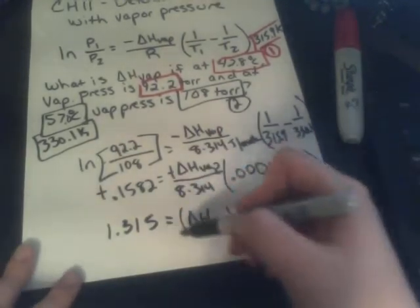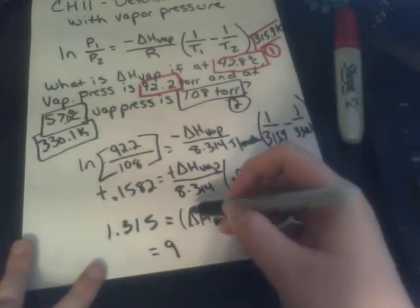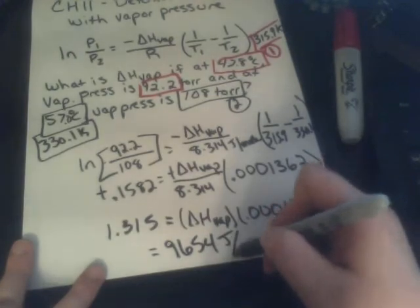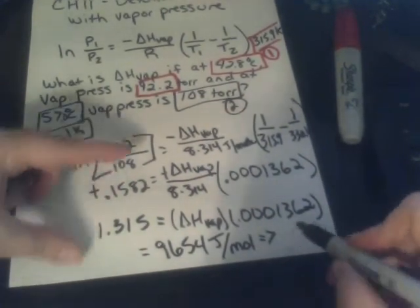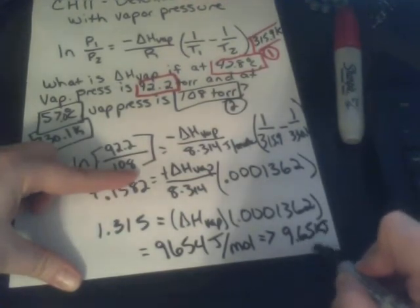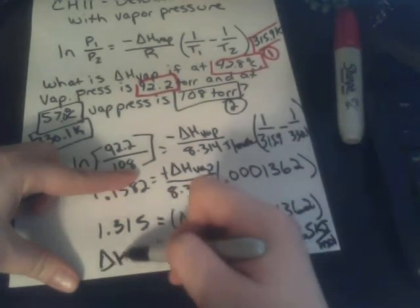So, I got 9,654. And the unit for that is in joules per mole. And they usually ask for it in kilojoules per mole. So, we could say 9.65 kilojoules per mole. And that is the enthalpy of vaporization.